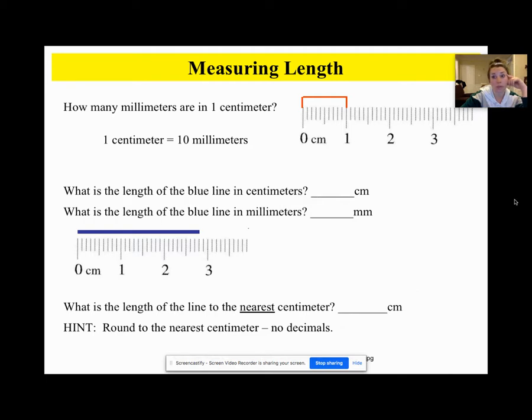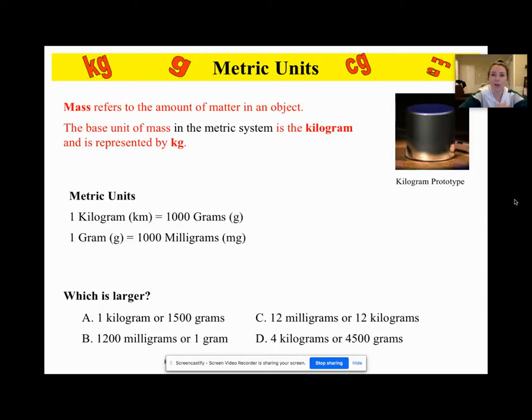What is the length of the line to the nearest centimeter? It's a little math, you have to round. Three. Three centimeters, or what is the blue line closer to, two or three? Three.